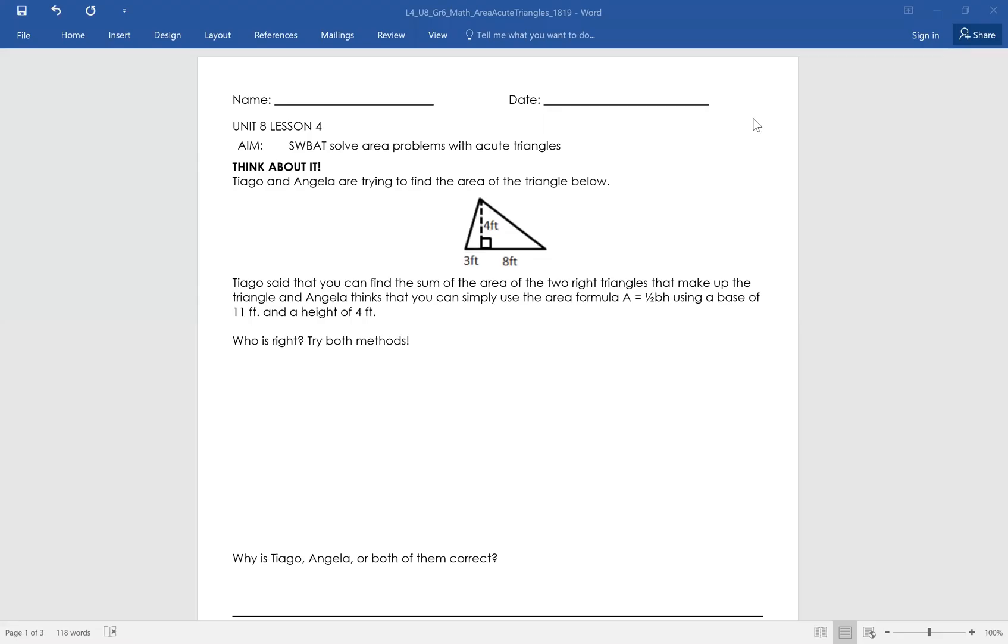All right guys, unit 8, lesson 4. Students will be able to solve area problems with acute triangles. What's an acute triangle? It's a triangle that has an angle that's smaller than 90 degrees, okay?